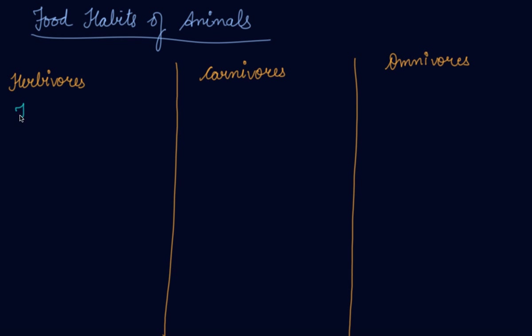Herbivores are animals that eat only plants. Have you ever seen a cow eating flesh? No. There are some animals that eat only plants, and human beings who eat only vegetarian food are also considered herbivores.